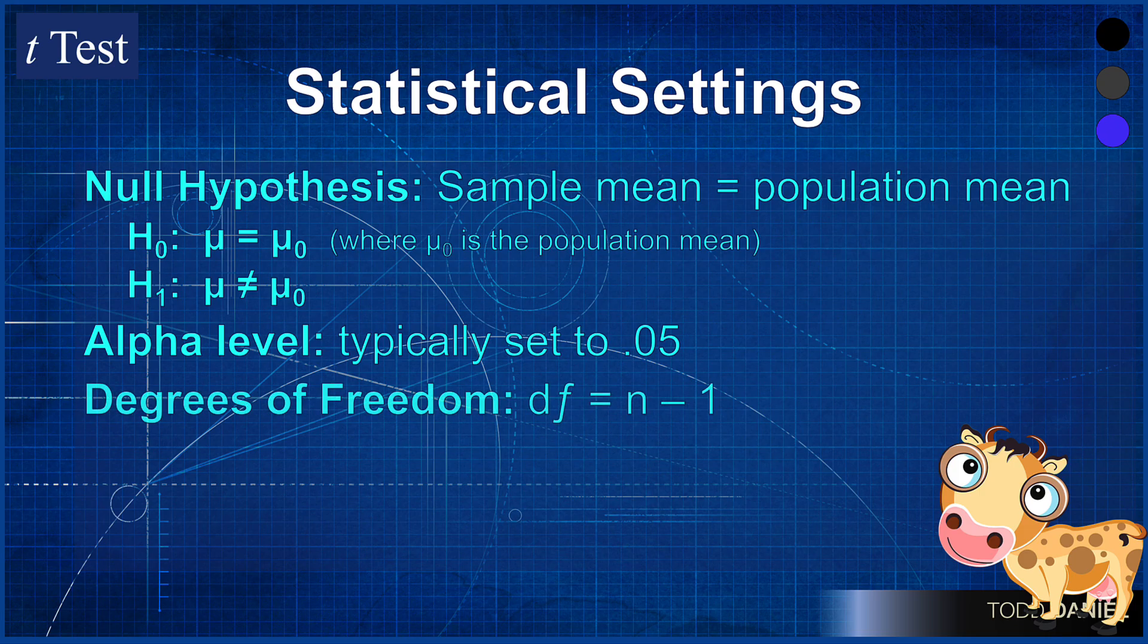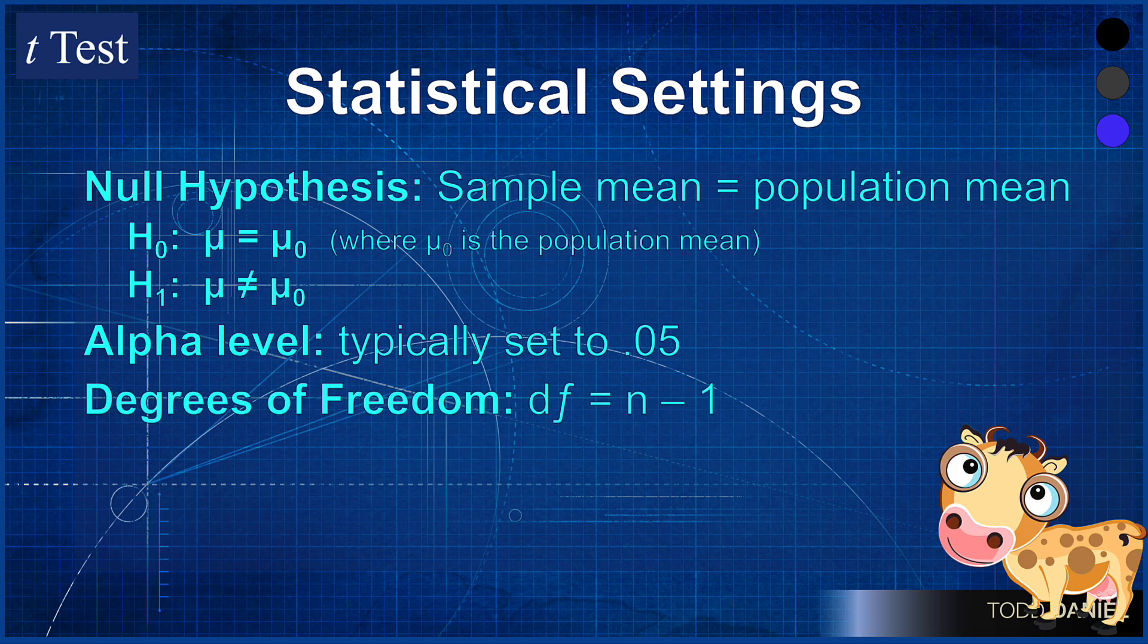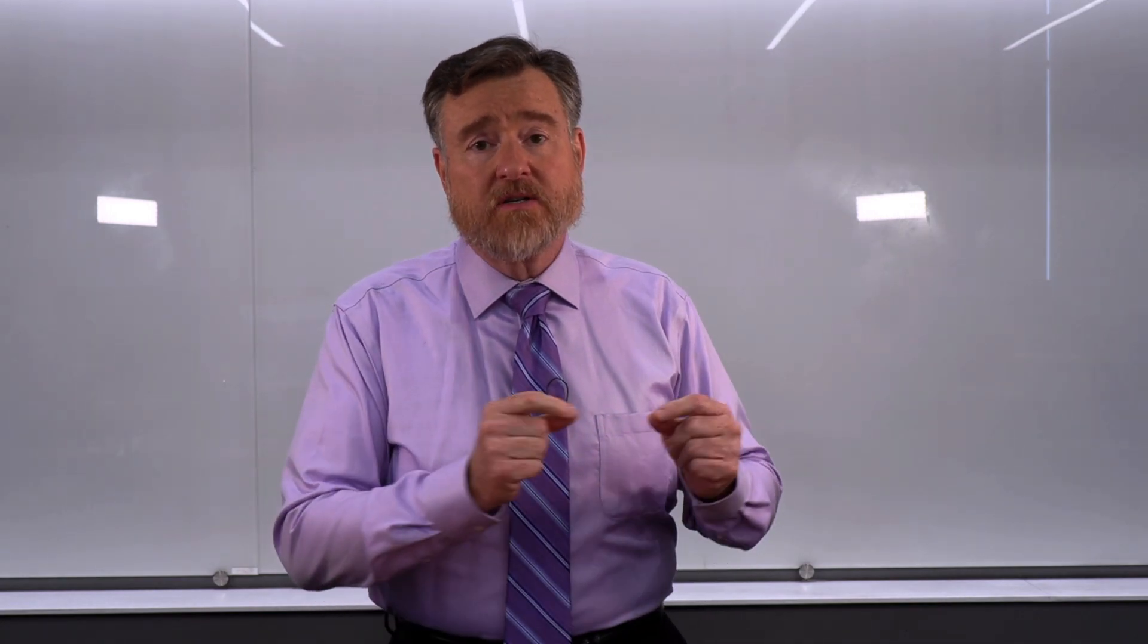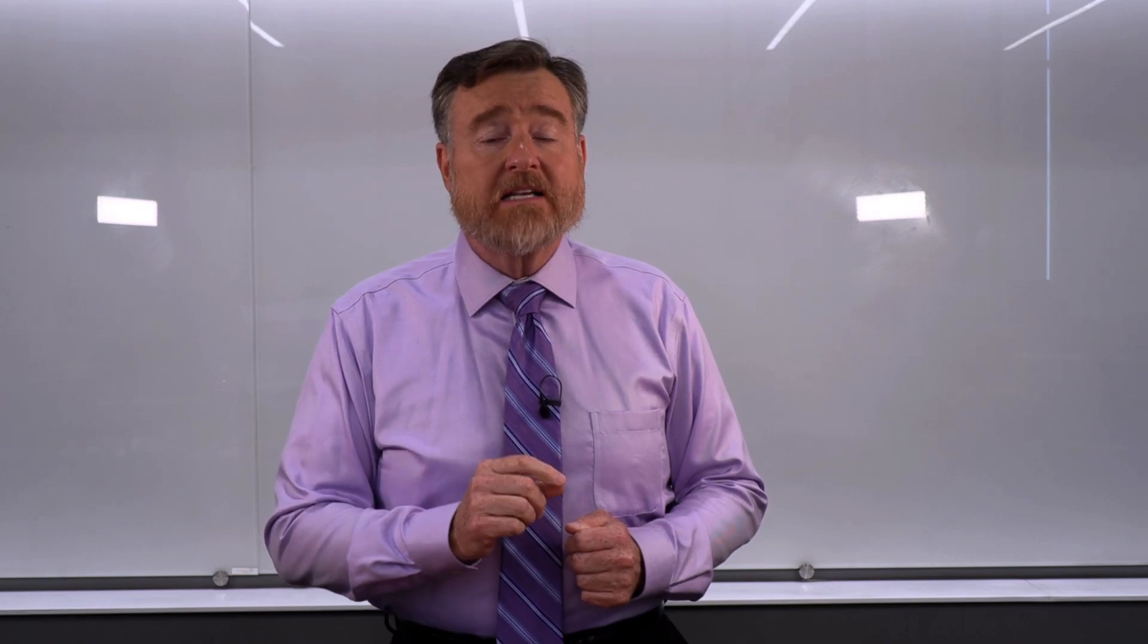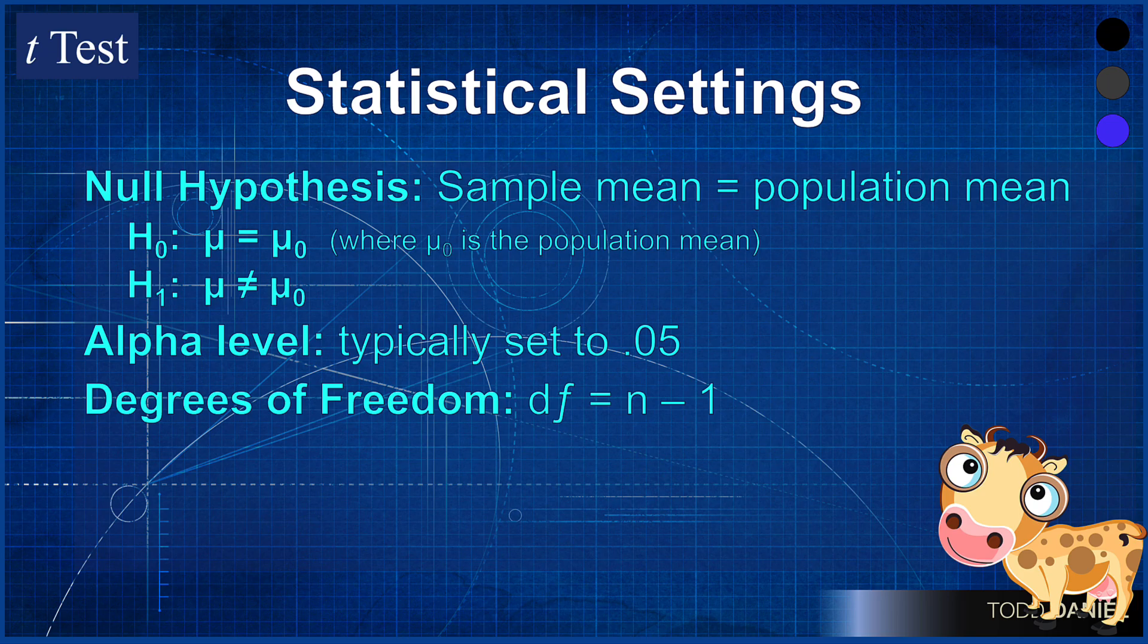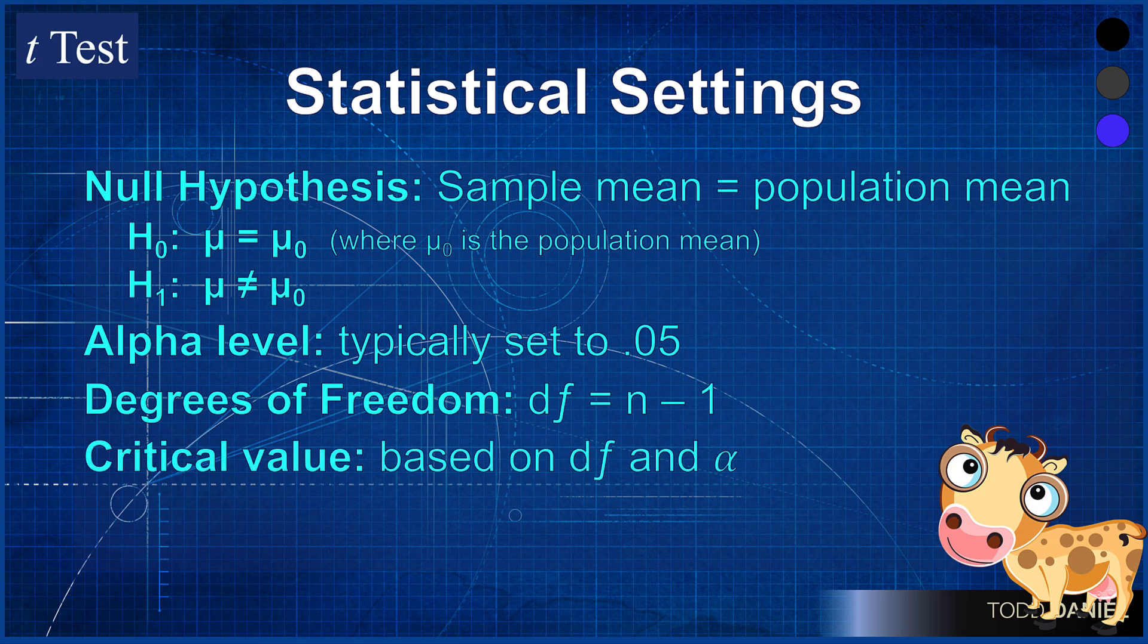We're using degrees of freedom because we are estimating the population standard deviation, which leaves us with one less value free to vary. The degrees of freedom for a t-test is n minus 1, the sample size minus 1. Our critical value will therefore be based on the number of degrees of freedom and our alpha level.